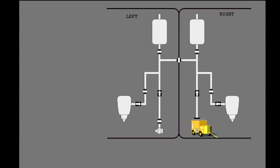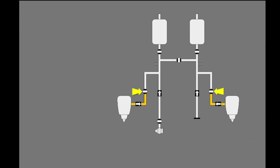The bleed air system has two sides, left and right. The isolation valve separates the left side and the right side of the bleed air system. The engine and APU bleed air valves control air that goes to the bleed air system. The air conditioning pack valves control air that goes to the air conditioning packs from the bleed air system.